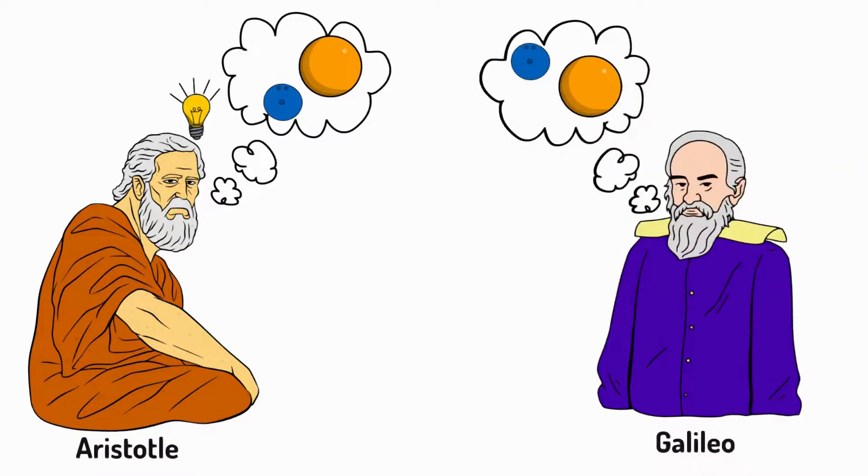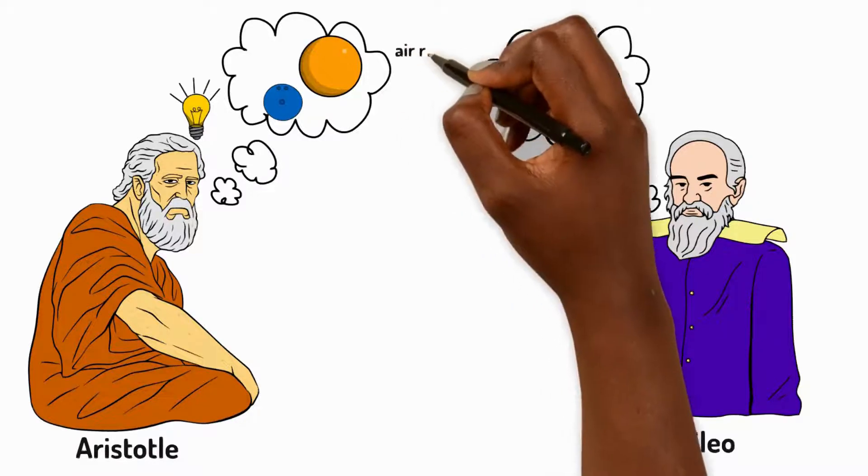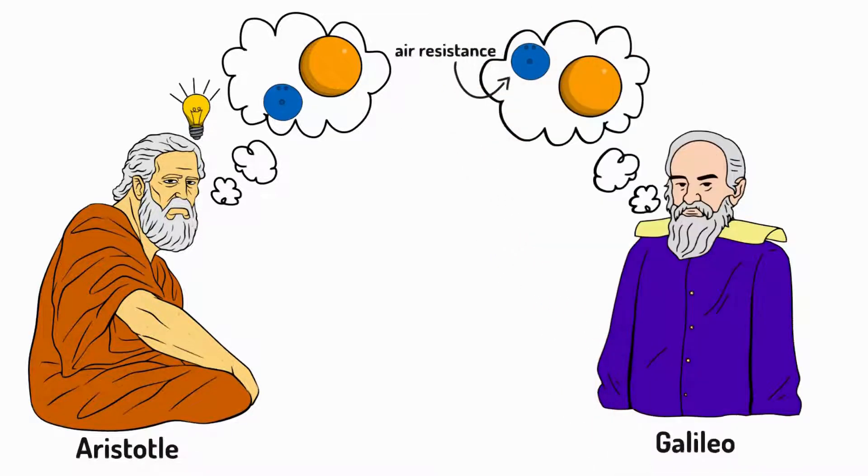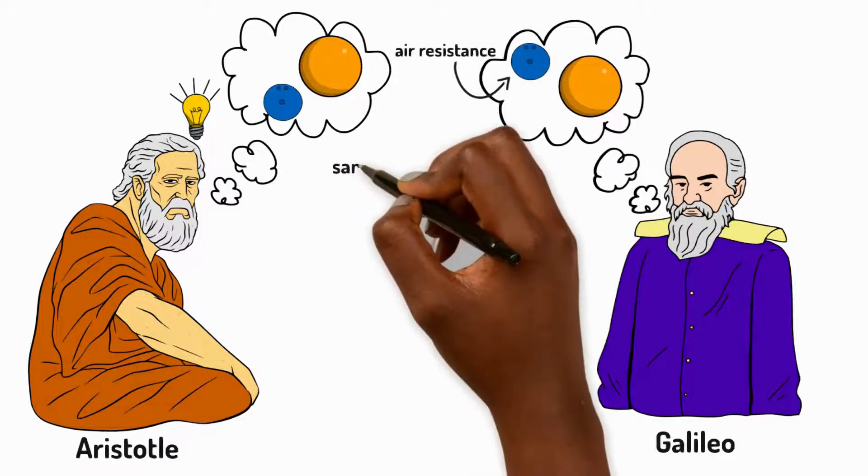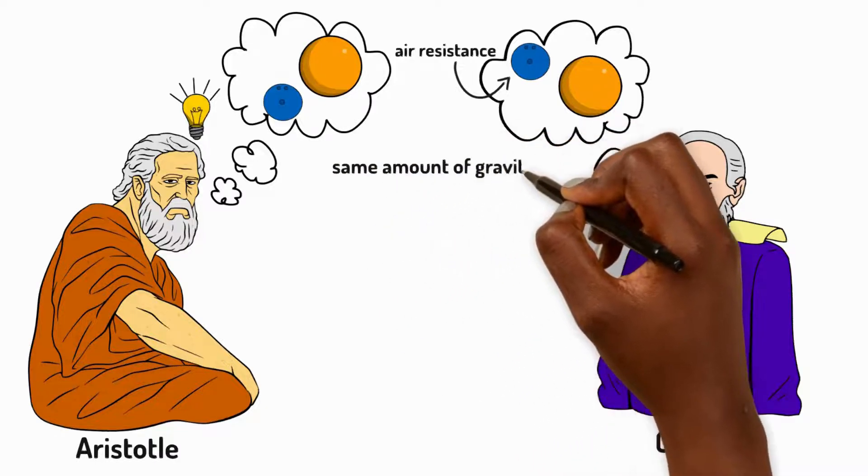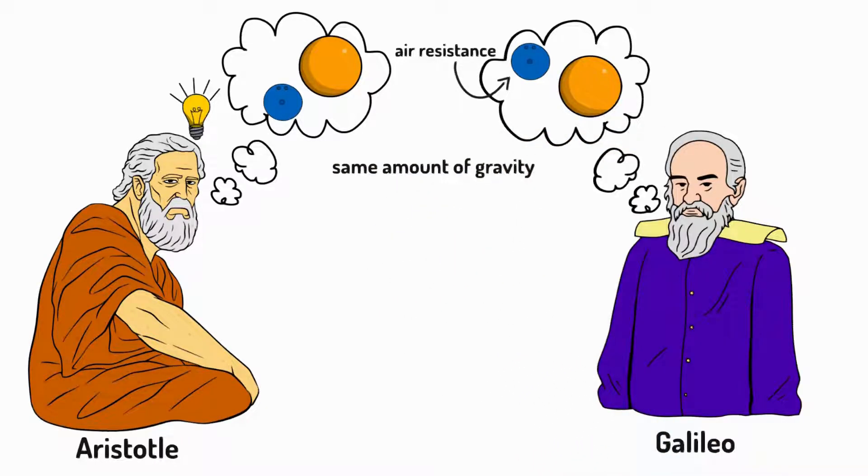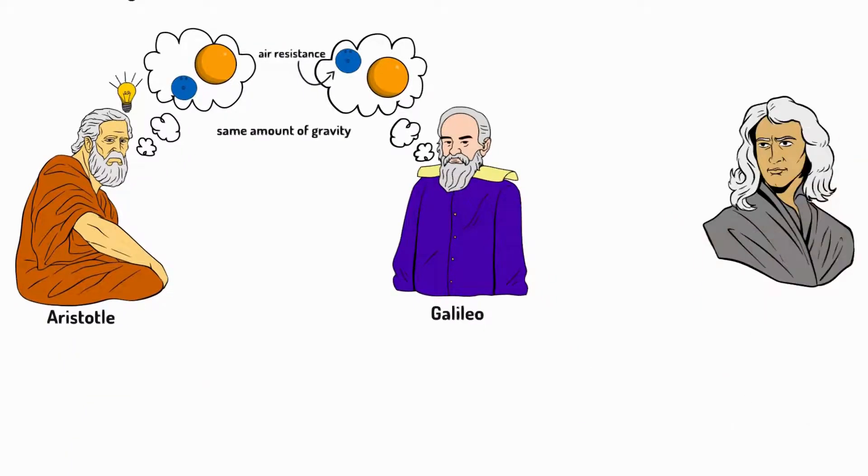He found that lighter objects fall slightly slower than heavier objects because air resistance affects them more. But his theory was that exactly the same amount of gravity pulled the heavier and the lighter ball towards the ground.